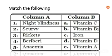Now match the following — which vitamin causes which deficiency disease. Night blindness is caused by deficiency of vitamin A. Scurvy is caused by deficiency of vitamin C. Rickets is caused by deficiency of vitamin B1. Beriberi is caused by deficiency of vitamin D. Anemia is caused by deficiency of the mineral iron.